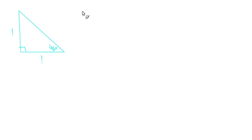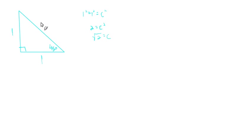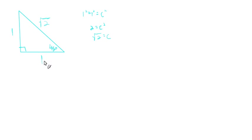We'll make both legs equal to 1 and both non-right angles 45 degrees. Using the Pythagorean theorem: a² + b² = c², so 1² + 1² = c², giving us 2 = c², so the hypotenuse equals the square root of 2. There's a very interesting history of the square root of 2 — you should look it up!